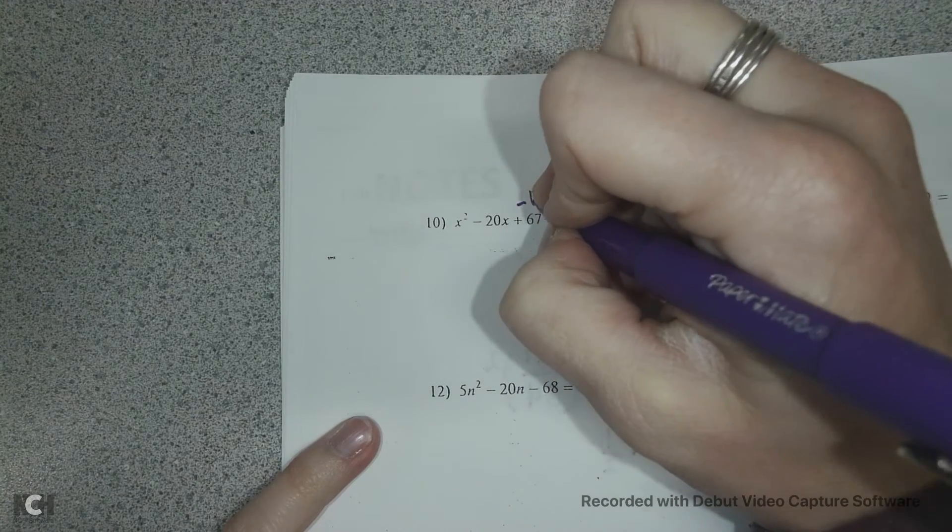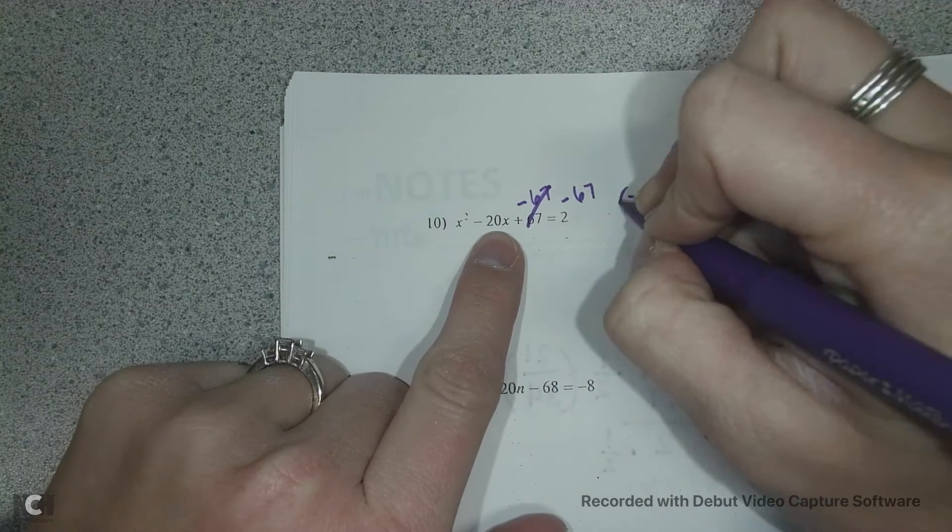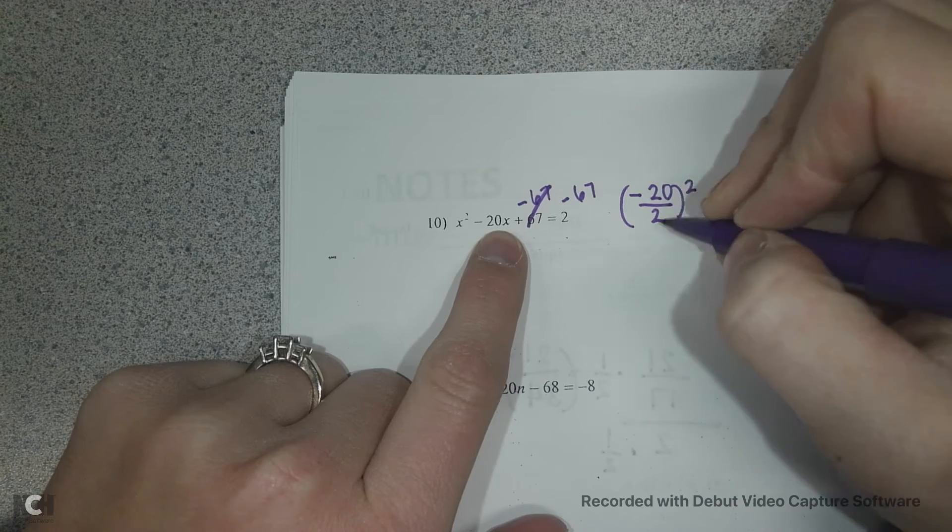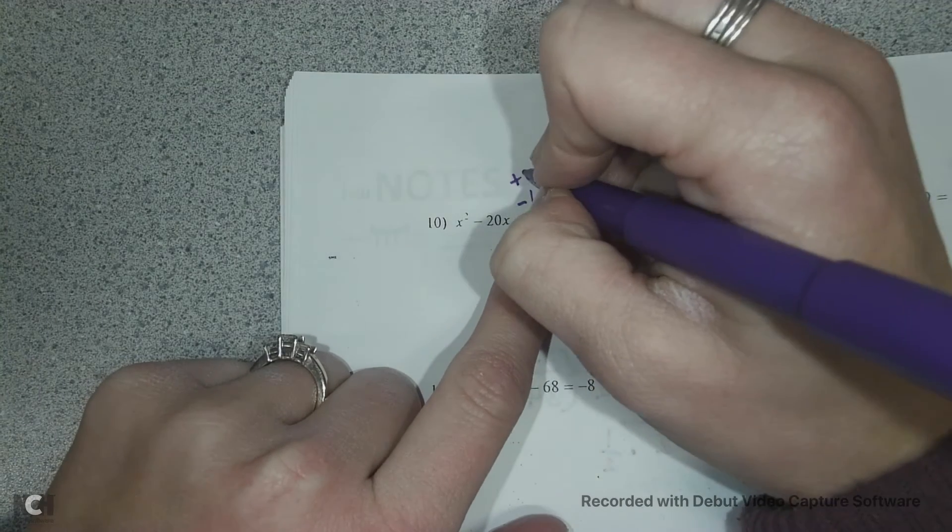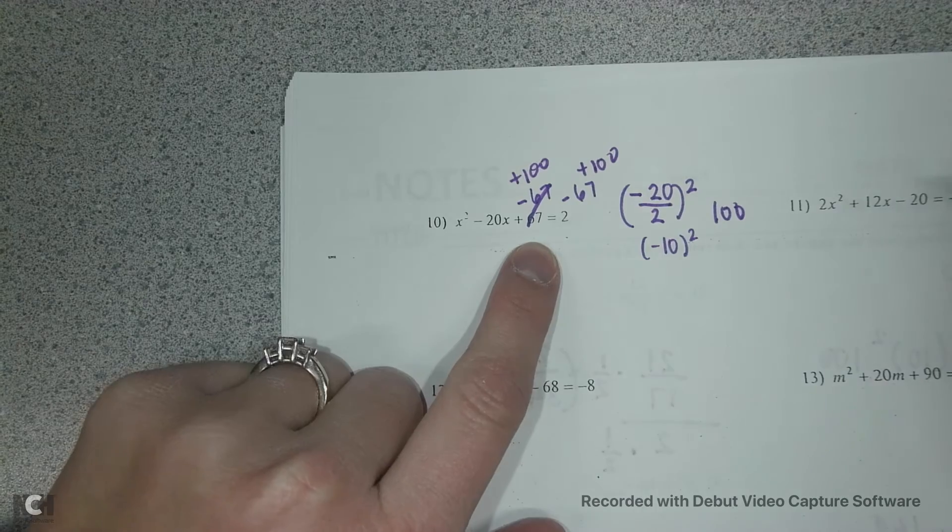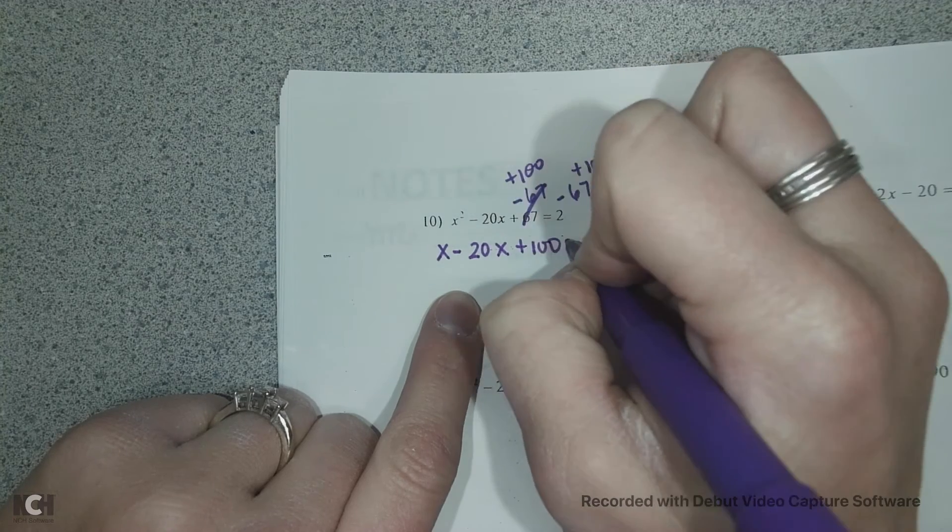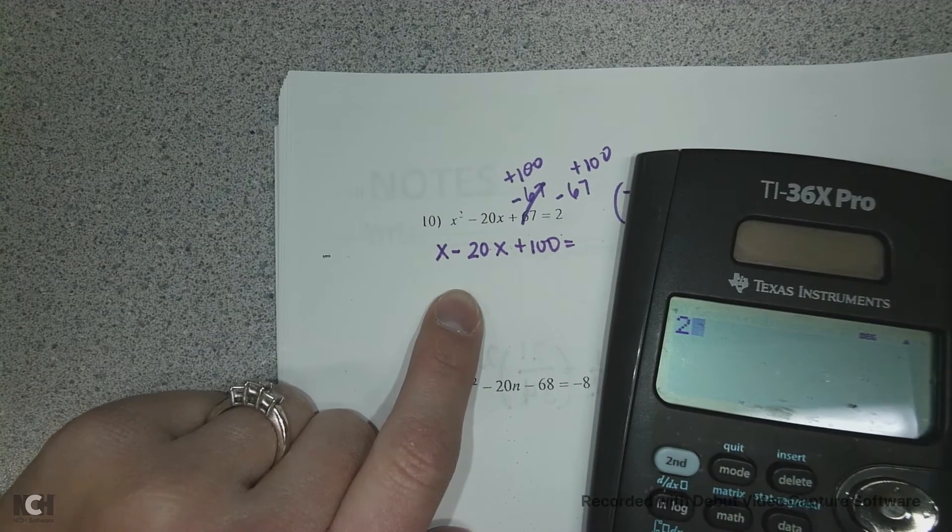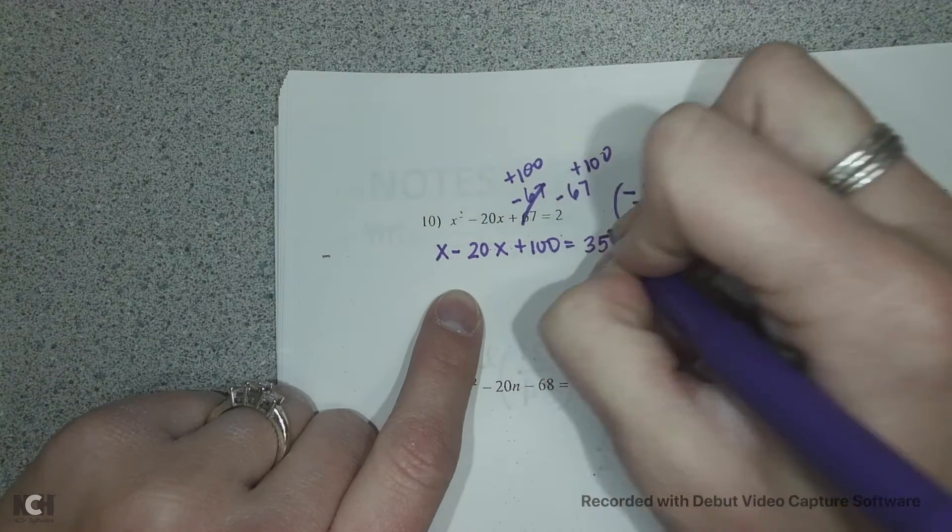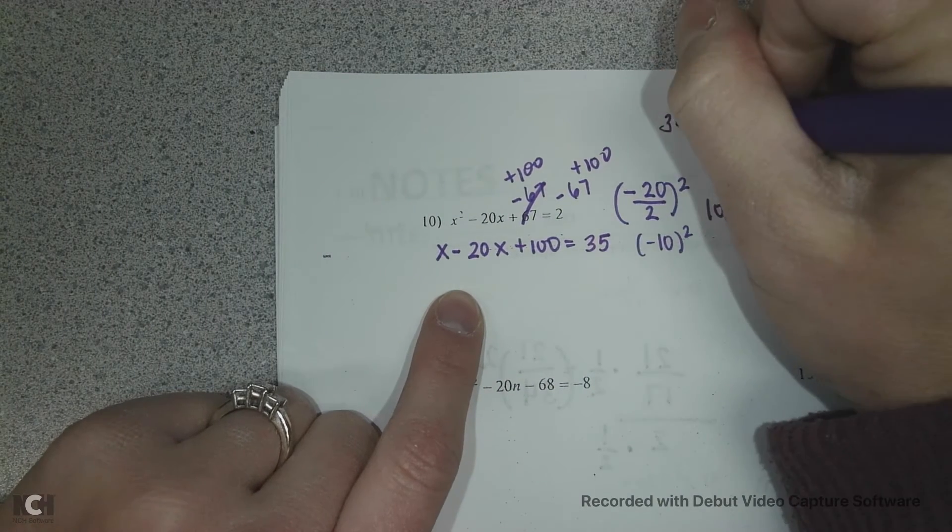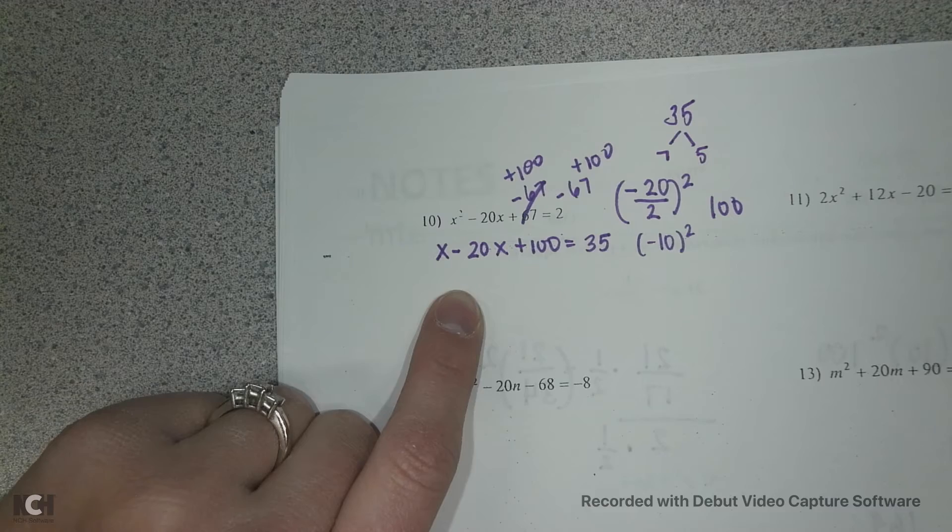So 10 is really similar to the front on number 6. So again, I'm going to subtract 67 on each side. My b value is negative 20. So we're going to take negative 20 divided by 2 and square that to complete our square. Negative 20 divided by 2 is negative 10 squared is 100. So I'm also going to add 100 to each side. Because what we do on one side, we must do on the other.